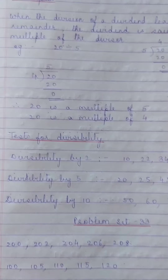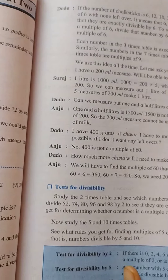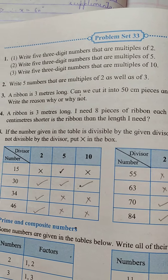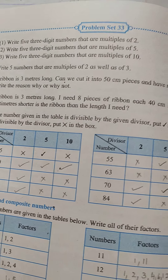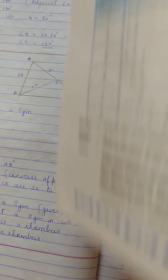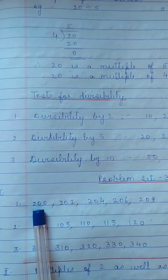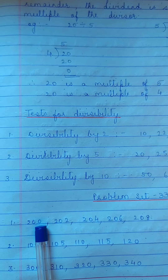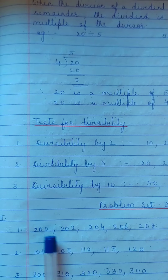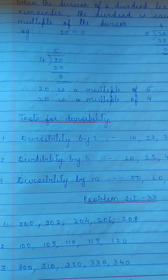We go to Problem Set 33, Question 1: write 5 three-digit numbers that are multiples of 2. Since a multiple of 2 must have 0, 2, 4, 6, or 8 in the units place, we write: 200, 202, 204, 206, 208.